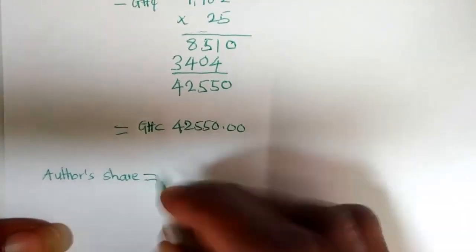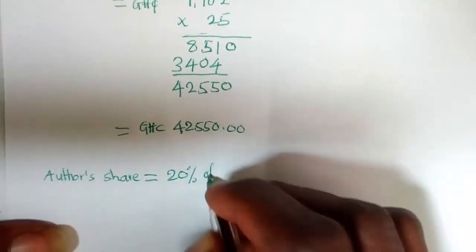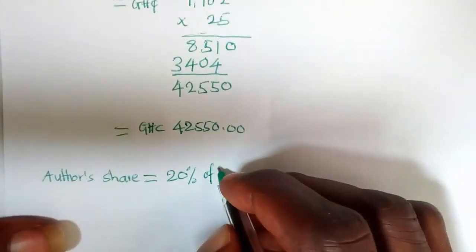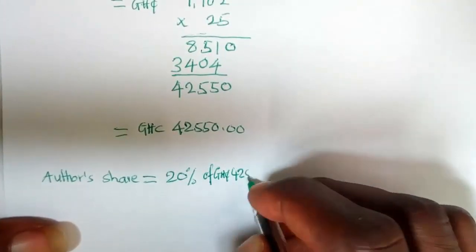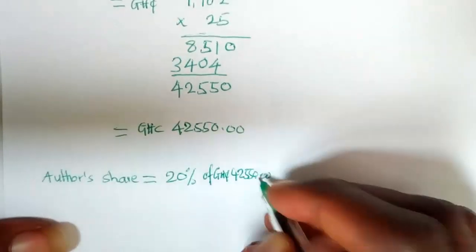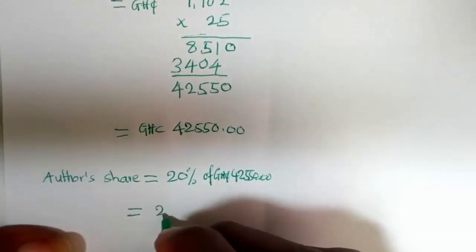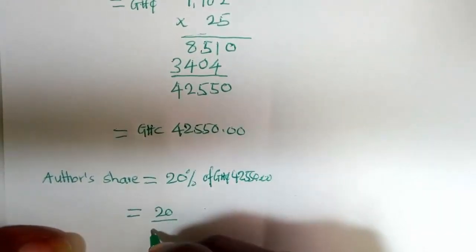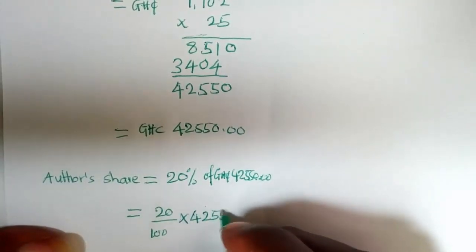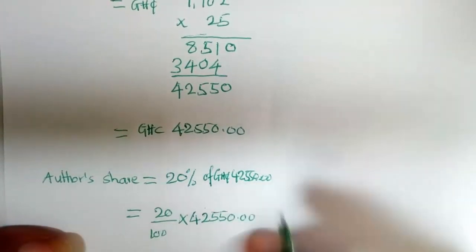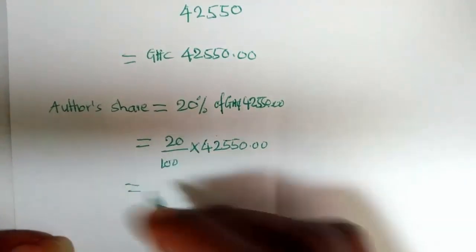The author's share is equal to 20% of the total cost. So the author's share is 20% of 42,550 cedis. This is the same as 20 over 100 times 42,550 cedis.